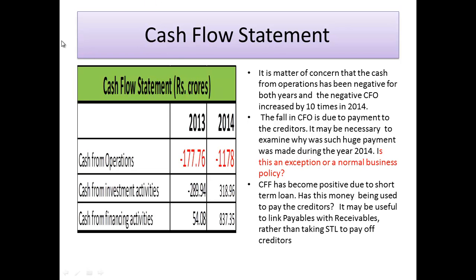Looking at the cash flow statement, it is concerning that cash from operations has been negative throughout these years. More importantly, cash from operations — the cash generated from the core trading activity — has become ten times more negative in 2014. This fall in CFO is due to large payments made to creditors, and it is necessary to examine why such a huge payment was made in 2014 and whether this is an exception or a normal business policy.